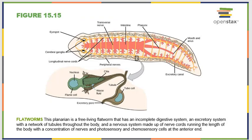Here's an example of a flatworm — a member of phylum Platyhelminthes. It's free-living, with an incomplete digestive system and an excretory system made up of a network of tubules throughout its entire body. Its nervous system consists of two long nerve cords running along either side with connections between them. On one end, they have eye spots, which can help them find light and sense shadows to locate food.